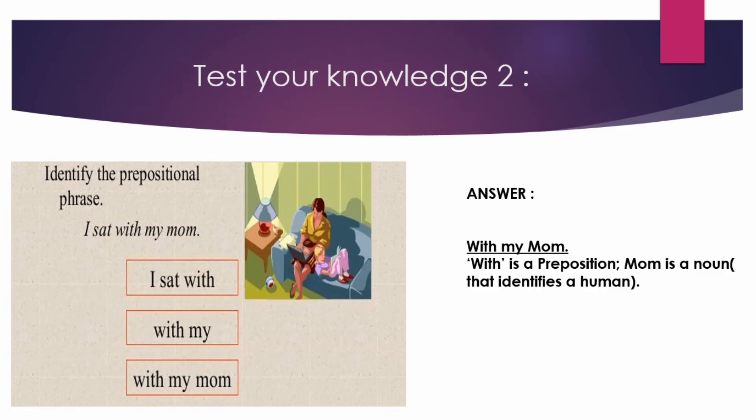This brings us to Testing Knowledge Two: identify the prepositional phrase. The example is 'I sat with my mom.' The correct prepositional phrase is 'with my mom' — 'with' is the preposition, and 'mom' is a noun identifying a person.